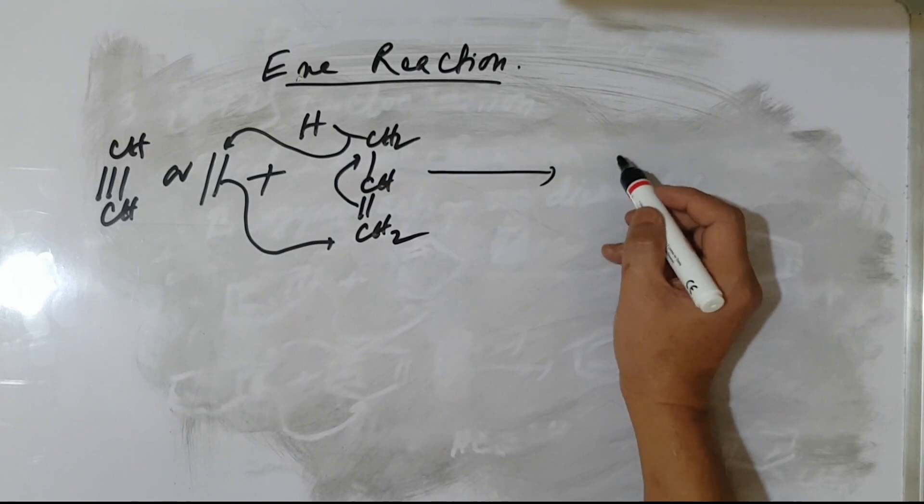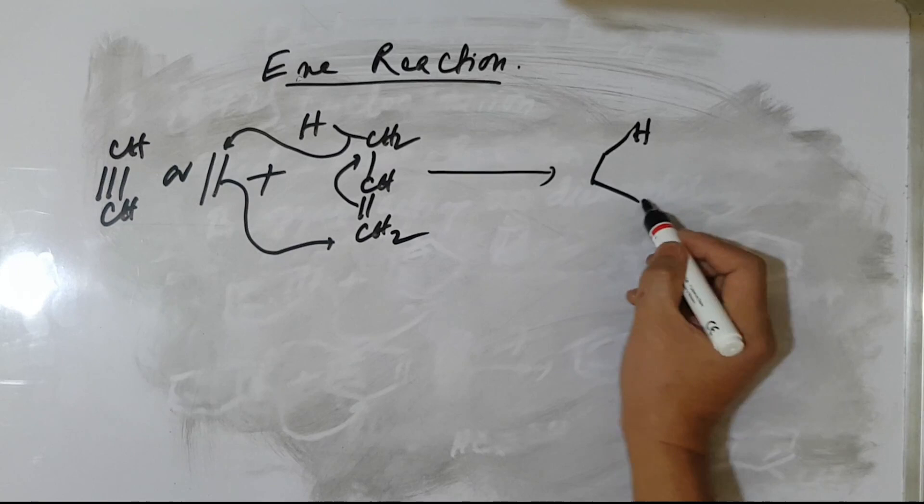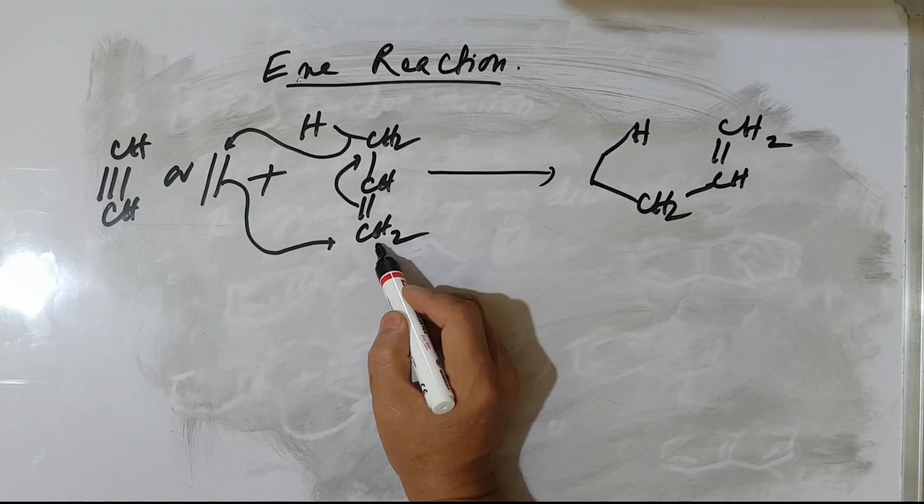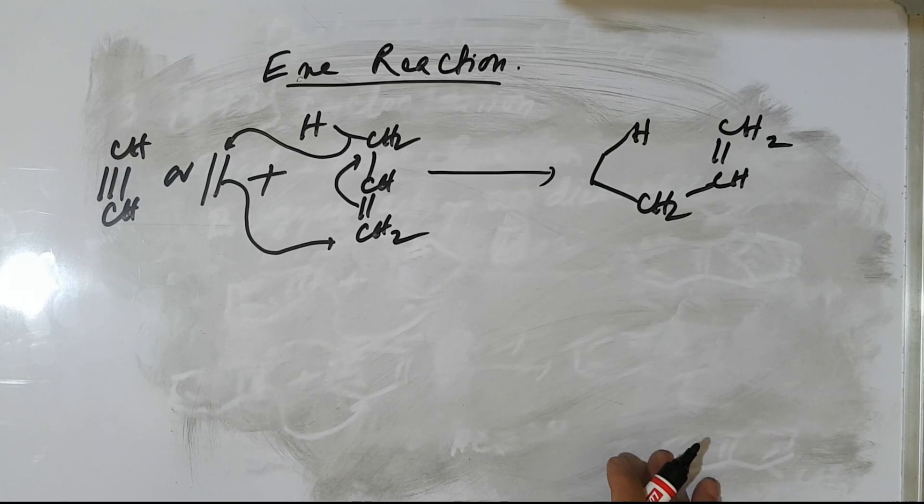Olefinic or acetylene compounds can react with hydrogen-containing allylic compounds to get this type of reaction. So, hydrogen transfer occurs here — CH links with CH2, and one CH2 comes out. This is called the ene reaction.